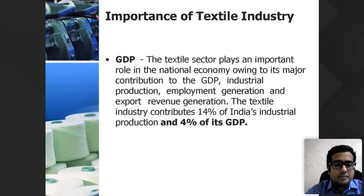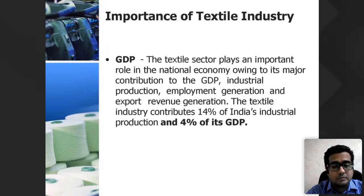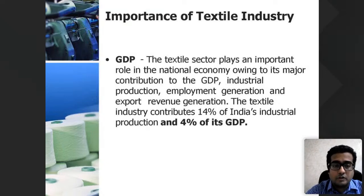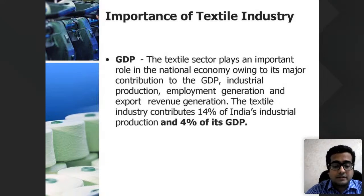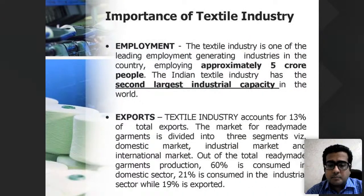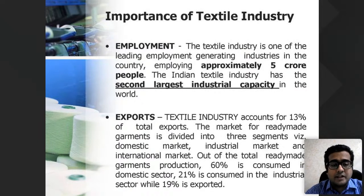Why is the focus on textile industry more than others? Textile industry plays an important role in the national economy due to its major contribution to GDP — around 4% of GDP comes from textile industries. The production capacity, employment generation, and export revenue from the textile industry are huge, so the government's focus on this industry is much larger than others.